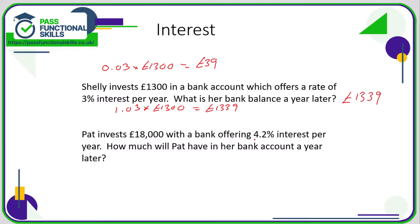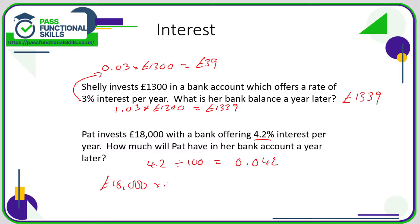Here's another example where the interest rate is 4.2%. This is quite a tricky percentage to turn into a multiplier. 3% became 0.03 — not too difficult. For 4.2%, if you're unsure, divide this number by 100, so our multiplier will be 0.042. Multiply £18,000 by 0.042, and that comes to £756 — the amount of interest that Pat receives. So at the end of the year, she will have £18,756.